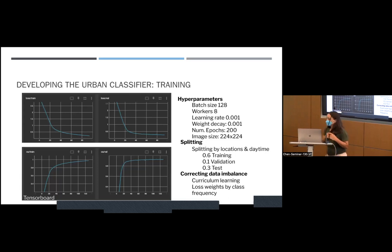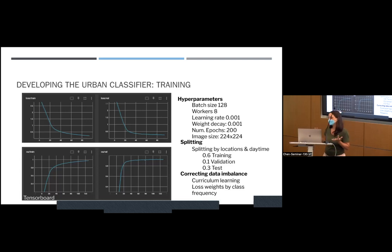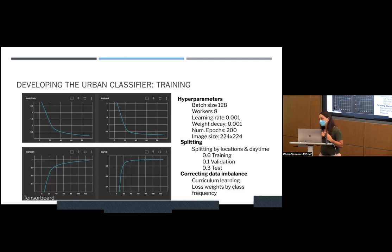I also tried doubling the image size, and it actually made the model worse — probably because we already have crops, and some crops were really tiny, so it had to upsample them a lot and they got really weird.